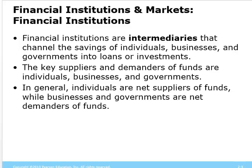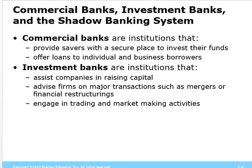The key suppliers of funds are individuals. Businesses and governments borrow money; individuals like you and me are the ones who save the money. Since there are a lot more individuals, all our savings gets added up and we invest it in businesses and the government for a return. We're going to be the net supplier of funds, and the government and businesses will be the net demanders of funds.